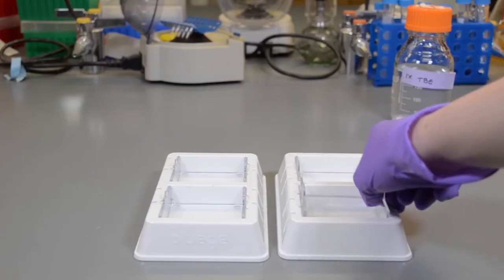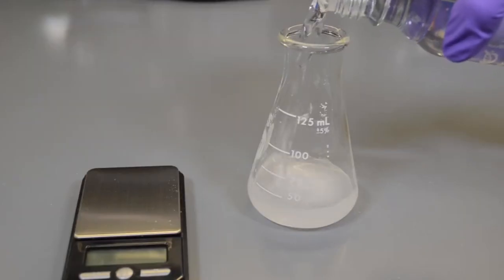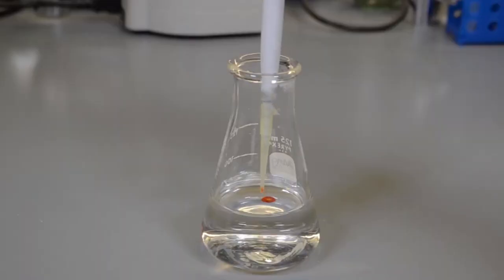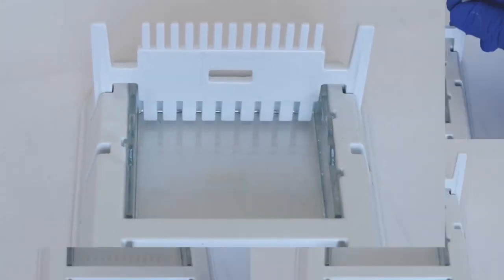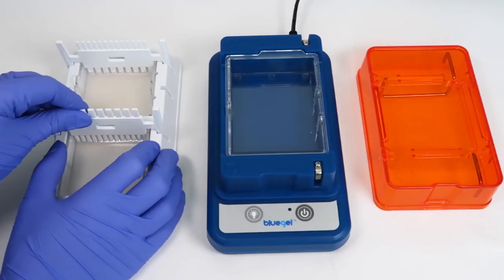The trays fit directly into the casting platform, helping to keep gel pouring mess-free. The process is as simple as melting agarose, adding dye, and pouring the gel. The two-sided combs give you the ability to create gels with 9, 13, 18, or 26 lanes, and the small gels will set in just 10 minutes.